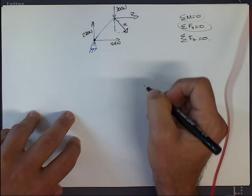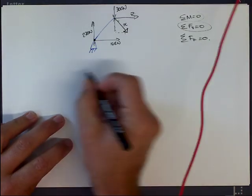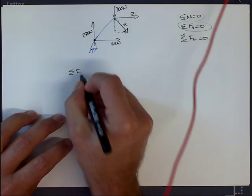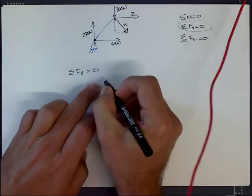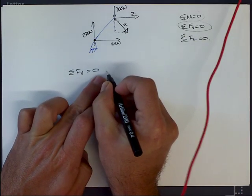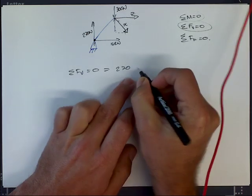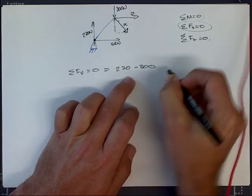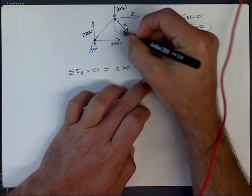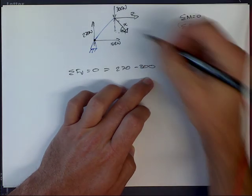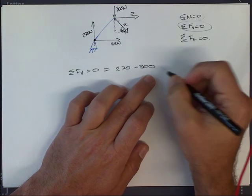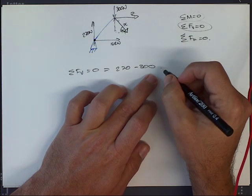The sum of the forces vertical must all add up to zero. What are all the vertical forces in this system? We've got 270 minus 300, and then the vertical component of x. This is a 60 degree angle triangle. I'm going to assume it's up and say it's x times sine of 60 degrees, which is the vertical component of x.